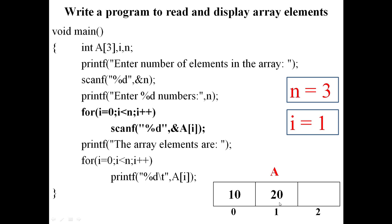After reading a[1] = 20, i increments to 2. Condition 2 < 3 is true, so scanf reads a[2]. Entering 30 assigns 30 to a[2]. Then i increments to 3. Condition 3 < 3 is false, so we exit the for loop.